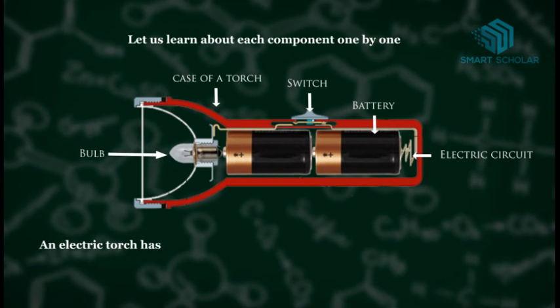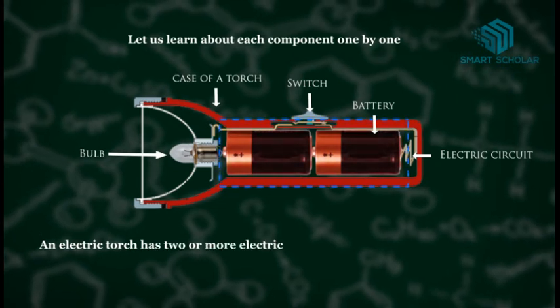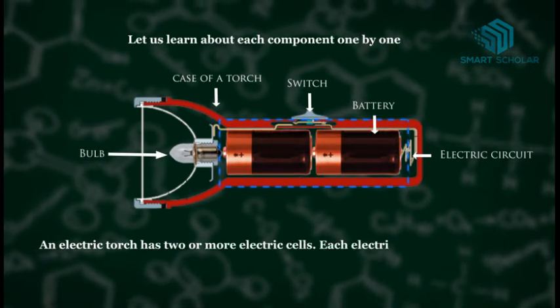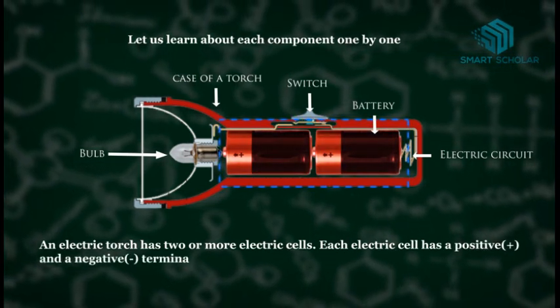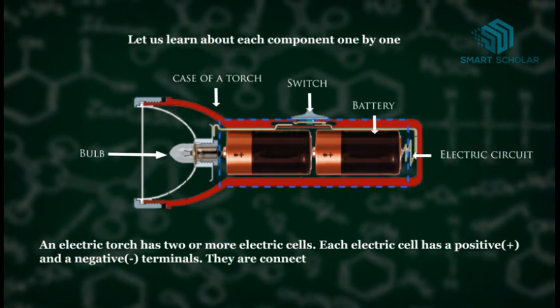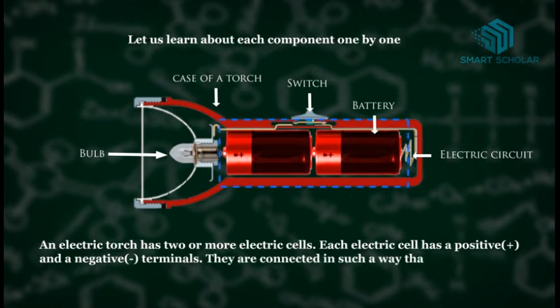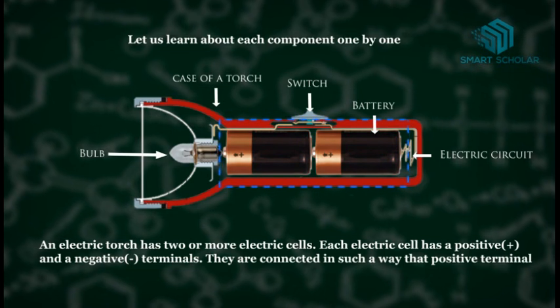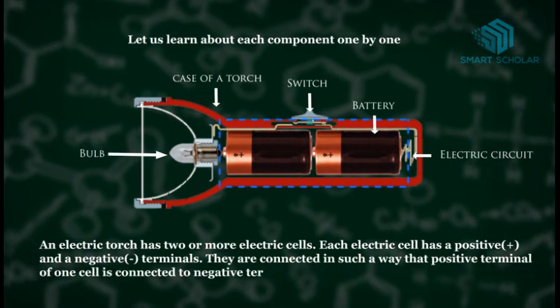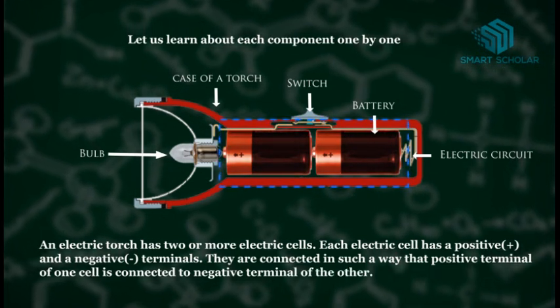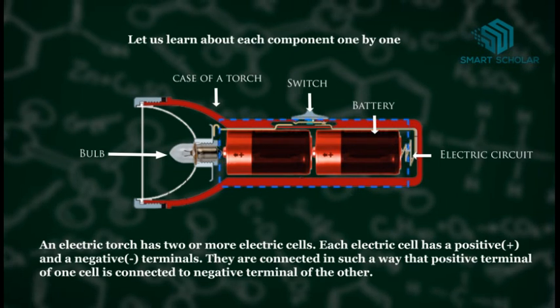An electric torch has two or more electric cells. Each electric cell has a positive terminal which is marked as plus and a negative terminal which is marked as minus at both ends. They are connected in such a way that positive terminal of one cell is connected to negative terminal of the other.